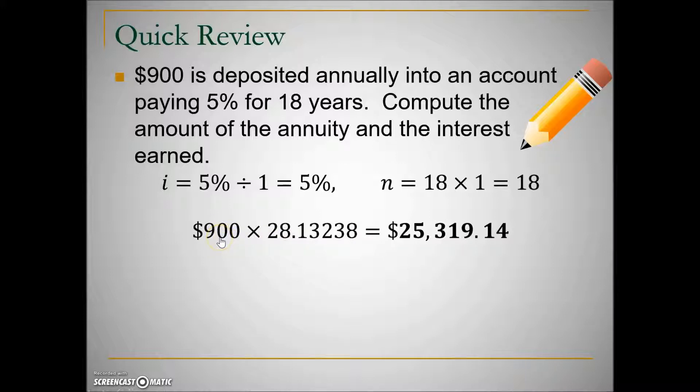To find the annuity value, we will multiply that number by the regular deposit, in this case $900, to give us an annuity value of $25,319.14.